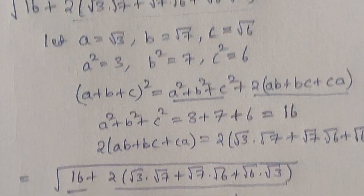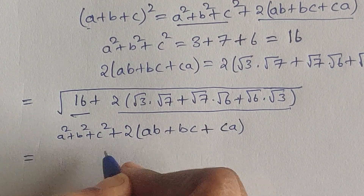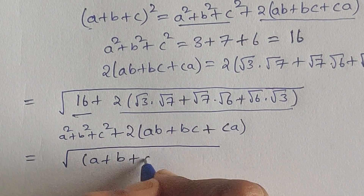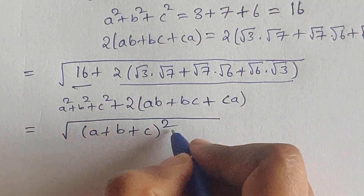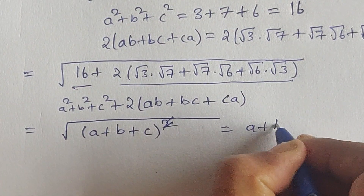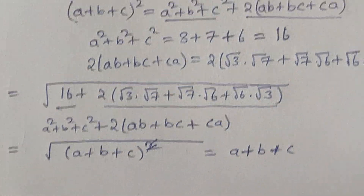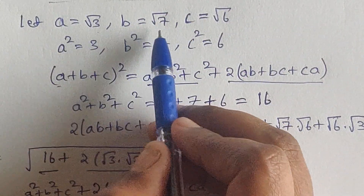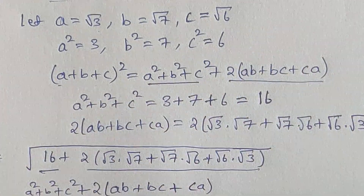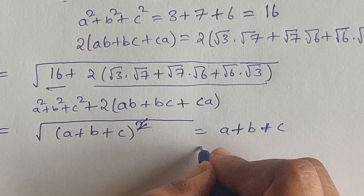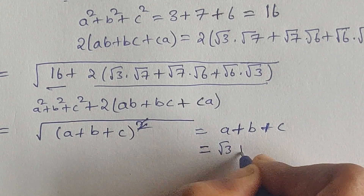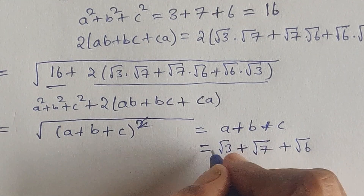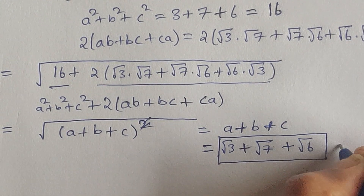We can replace the expression with (a plus b plus c) squared. Taking the square root, the square and square root cancel, giving us a plus b plus c. Substituting the values: a is square root of 3, b is square root of 7, c is square root of 6. So the answer is square root of 3 plus square root of 7 plus square root of 6.